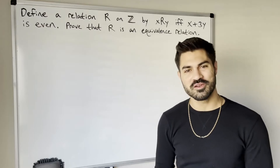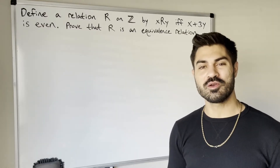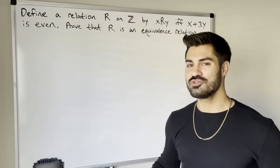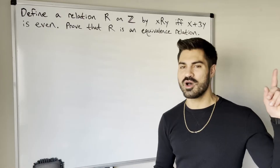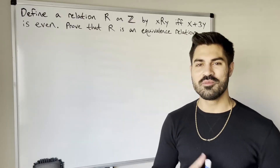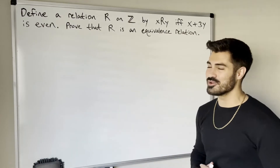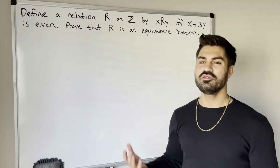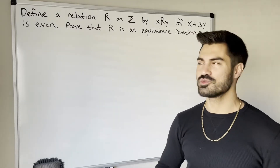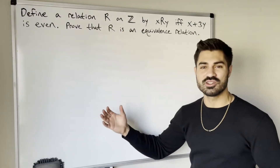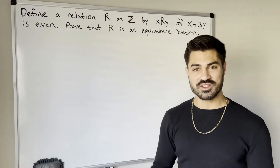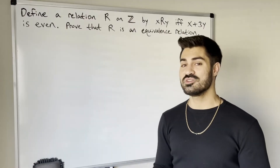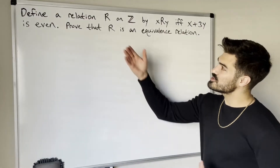Welcome to another video. In this video we're going to practice proving that a relation is an equivalence relation. If you're brand new to equivalence relations there's an introduction linked above, but if you're ready to start proving, let's jump right in. We're going to notice through this example that all of these proofs have sort of the same structure — we show that the relation is reflexive, symmetric, and transitive.